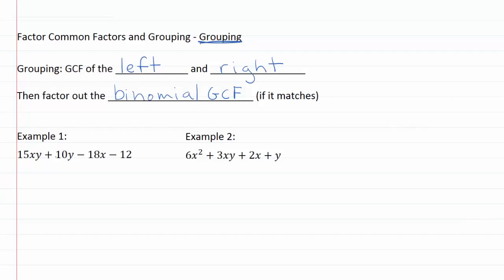15xy plus 10y minus 18x minus 12. So I'm not seeing anything that can divide into all of these. They don't have any variables in common, they're not all even, not all multiples of three. So it looks like we're definitely going to have to try breaking this in half to see if we can find a common factor on the left hand side and then a common factor on the right hand side. So I just drew this line right down the middle between the terms.